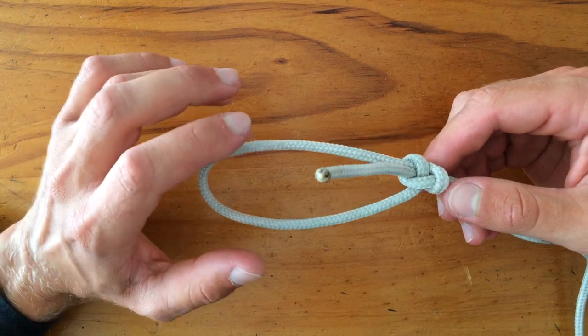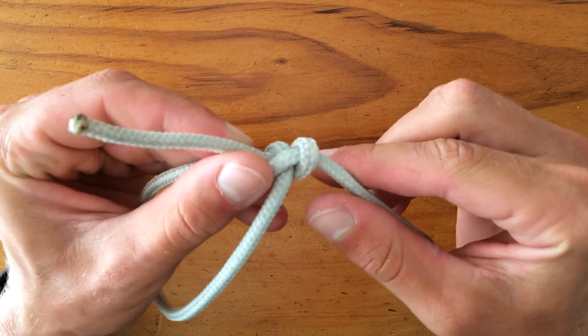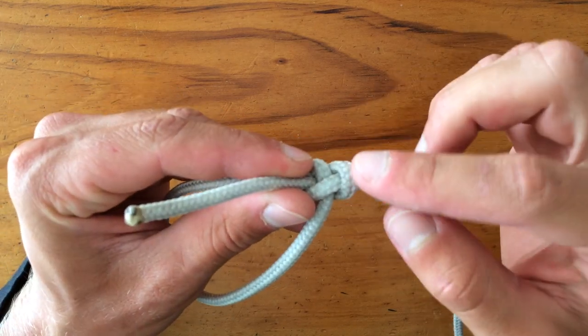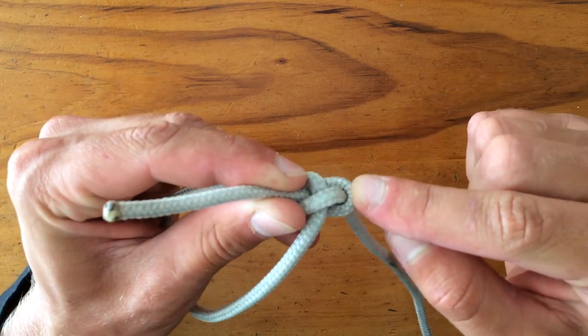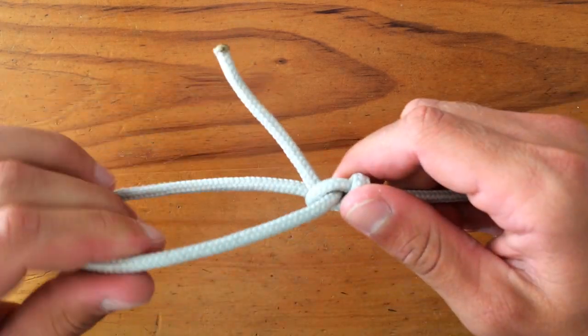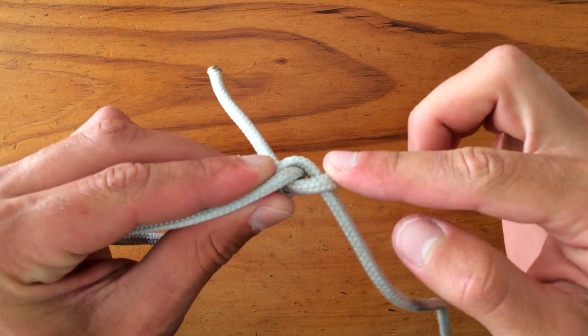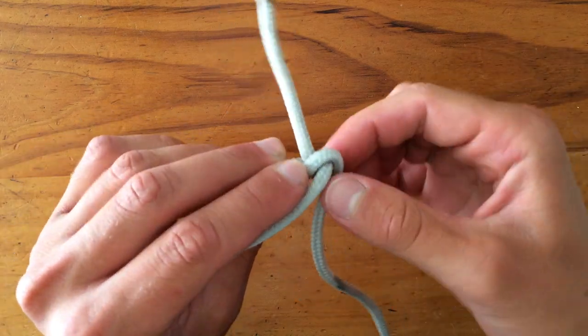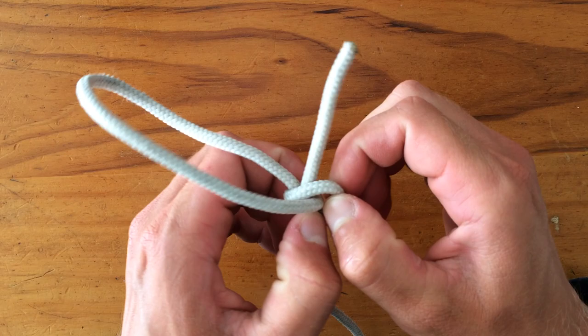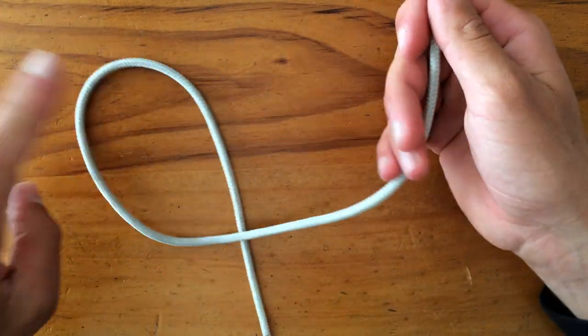The different thing about the bowline is that this part here, to get the knot undone, you just push that backwards like that. When it's tight it'll sit like this, then you just push it backwards and it loosens the whole knot, even if it's been pulled tightly, and it comes undone very easily. See how easy that was.